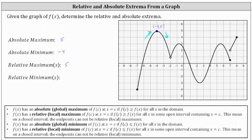Next, it appears as if we have a low point at the point negative two comma one. But notice how this is an open point, which indicates the function is undefined here, and therefore this is not a low point on the graph. Next, notice we have a high point where the ordered pair is approximately negative 0.8 comma 3. There is an open interval containing x equals negative 0.8, so the y value of 3 is a relative maximum, which occurs at x equals negative 0.8. We list 3 as a relative or local maximum. Notice the function changes from increasing to decreasing at this point.